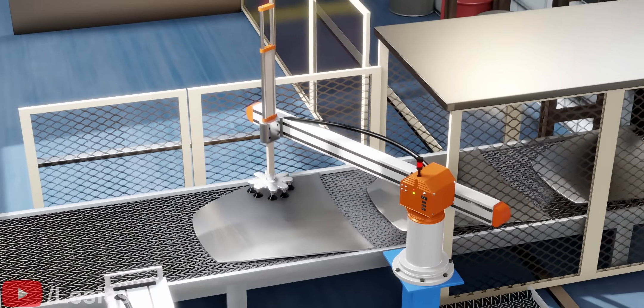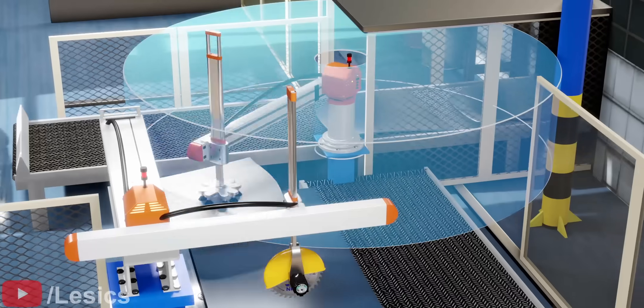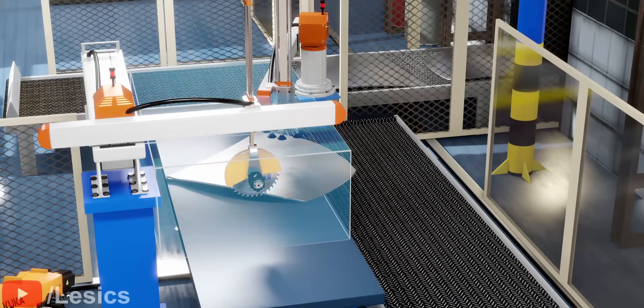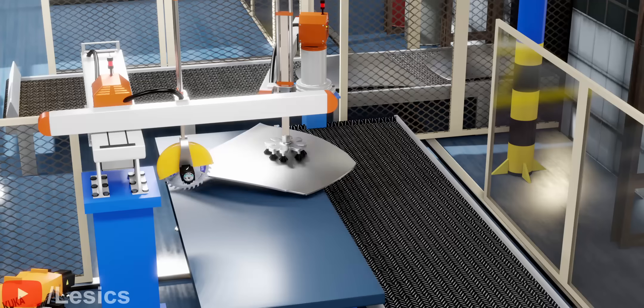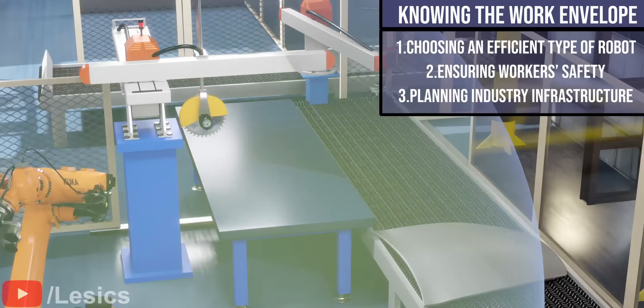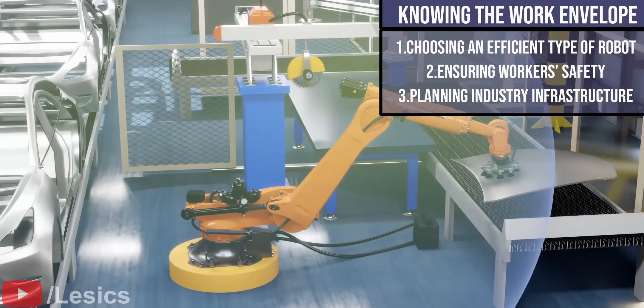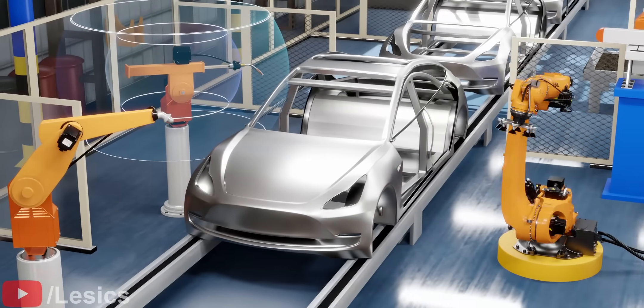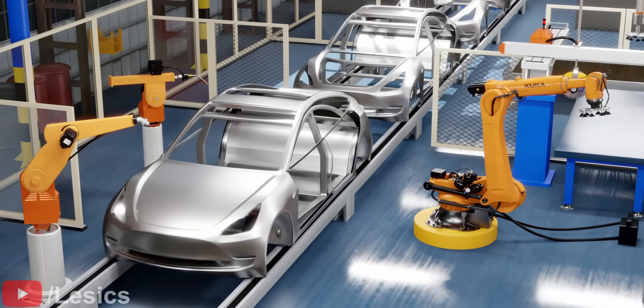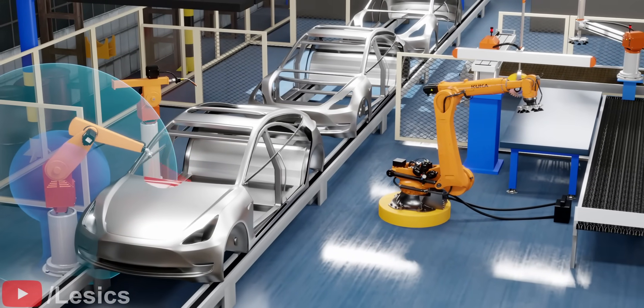In many industries, advanced versions of these robots with more complex rotary joints are used for assembly lines, welding, spray painting, etc. Knowing the work envelope helps you in many ways. We hope you now understand robots' work envelopes. See you in the next advanced video on robotics. Don't forget to be a member of the Lessix team. Thank you.